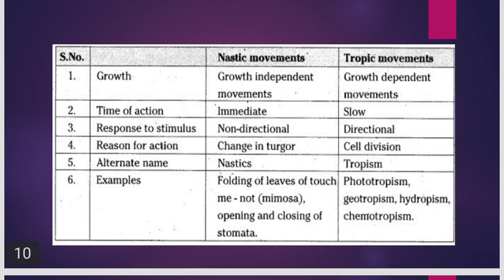For example, nastic movements include the mimosa plant — touch-me-not — when you touch the plant the leaves get folded, not depending upon the direction of the stimulus. Also the opening and closing of stomata are examples of nastic movements. Whereas examples of tropic movements are phototropism, geotropism, hydrotropism, thigmotropism, and chemotropism, and we will see in detail what these are.